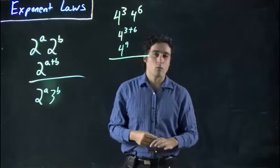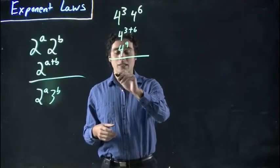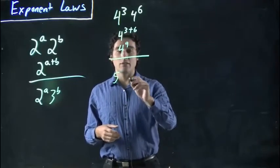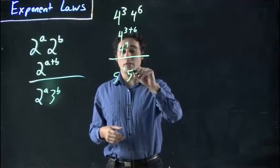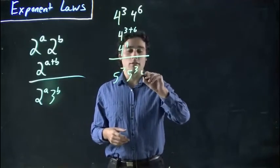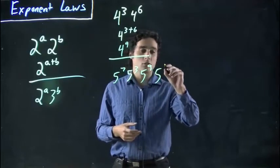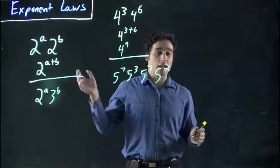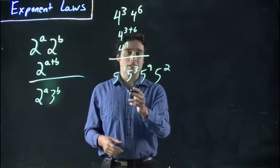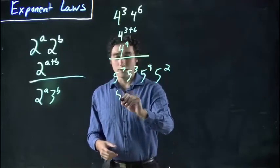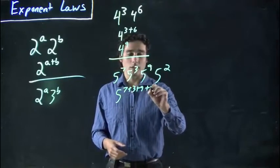But what if there's more? More than 2. Again, it doesn't matter what the base is, as long as the base is the same. So, 5 to the 7, and 5 to the 3, and 5 to the 9, and 5 to the 2. Great. Again, I could just do them all separate, but if I want to simplify this as an exponent, this is the same as saying 5 to the 7 plus 3 plus 9 plus 2.